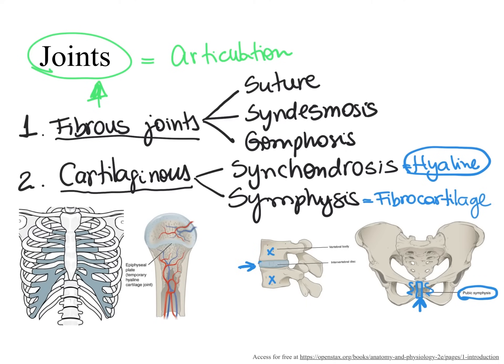We also find fibrocartilage between the bodies of our vertebrae. This thick pad of fibrocartilage is very important for shock absorption between vertebral bodies. This pad — commonly called the intervertebral disc, where 'inter' means between and 'vertebral' means vertebra — is another example of a symphysis. Since it is a symphysis between two vertebrae, it is named the intervertebral symphysis.